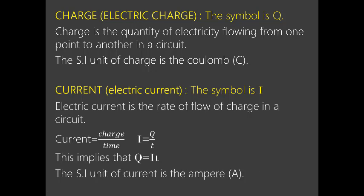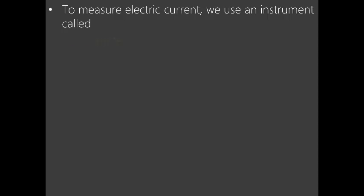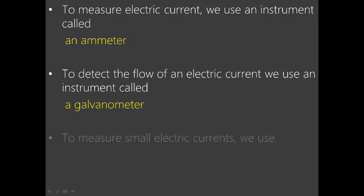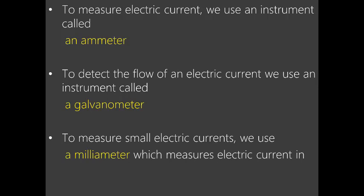To measure electric current there is a special instrument called an ammeter. To detect the flow of electric current we use an instrument called a galvanometer — a galvanometer only detects but does not measure. To measure small electric currents we use a milliammeter, which measures electric current in milliamperes.